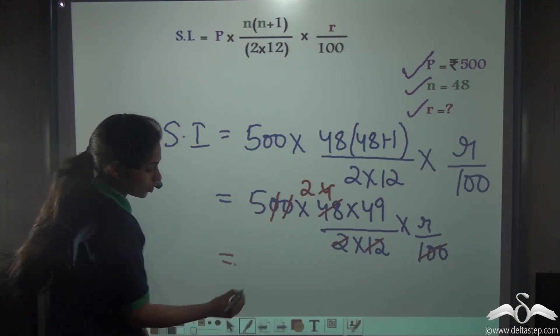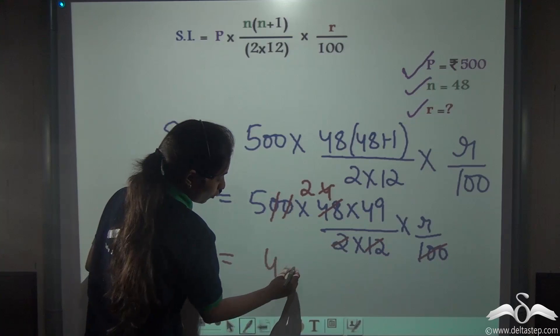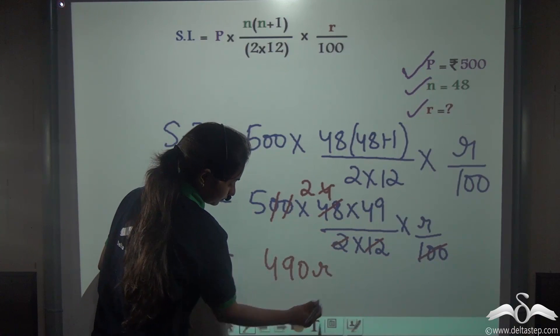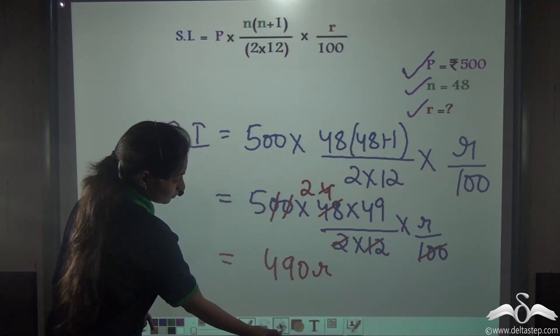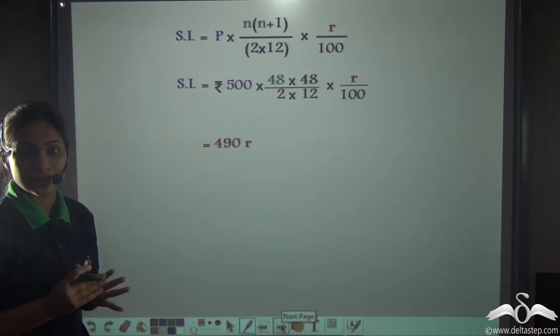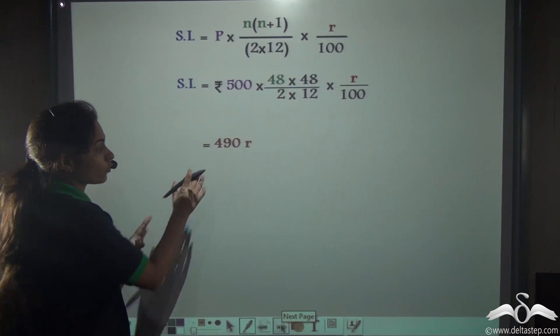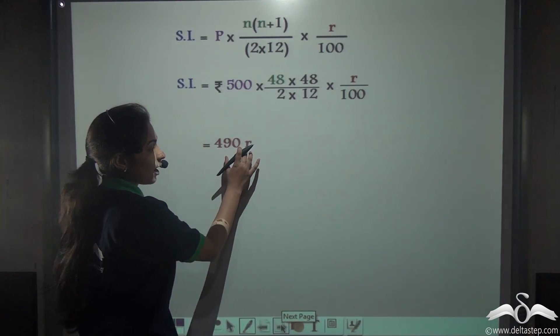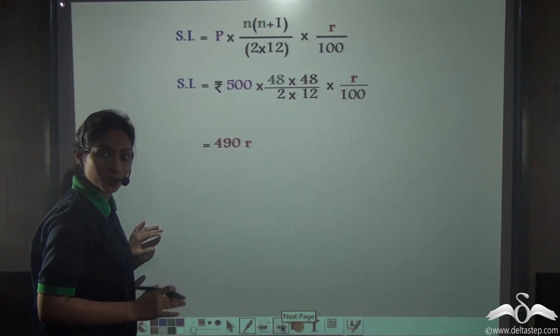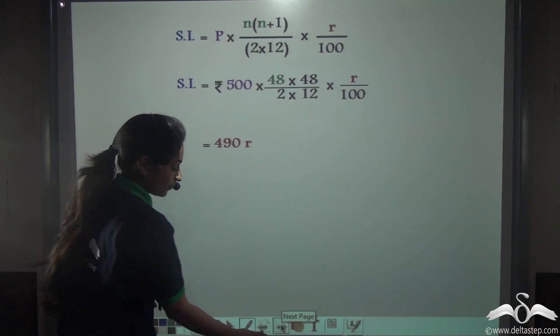Simplifying this, you get SI = 490R. So, the interest that Saloni received was 490R, where R is the rate of interest per annum.